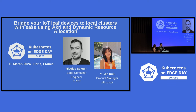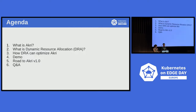And I'm Nicola, and I work at SUSE in the Edge BU, and I'm also a maintainer of Akri. So today, we'll go over what is Akri, what is dynamic resource allocation, and how these two can work together to optimize connecting to IoT leaf devices at the Edge. We'll also do a little demo and talk about our roadmap to going to an Akri version 1.0.